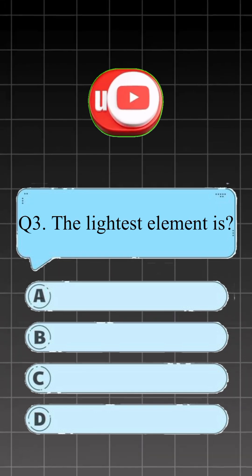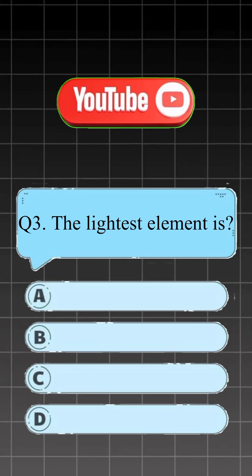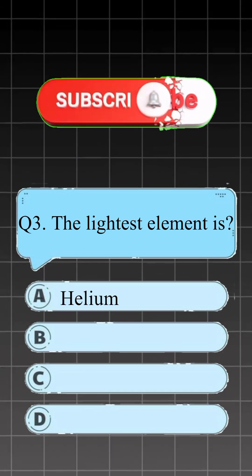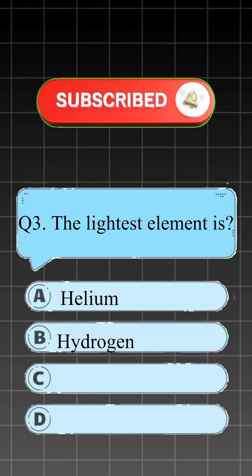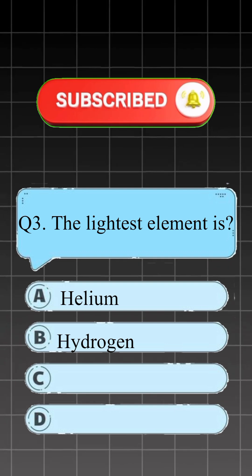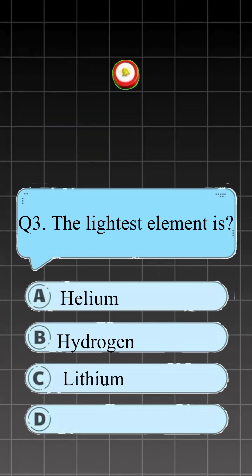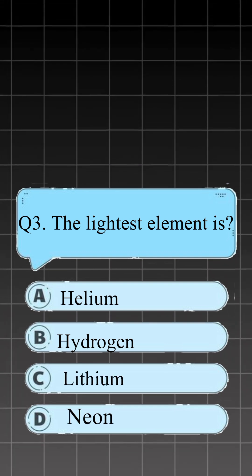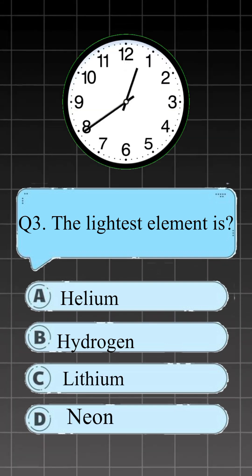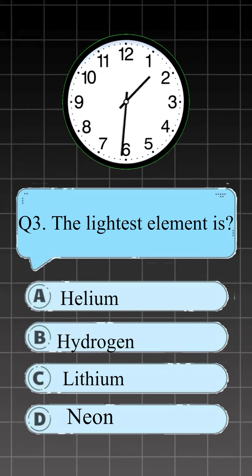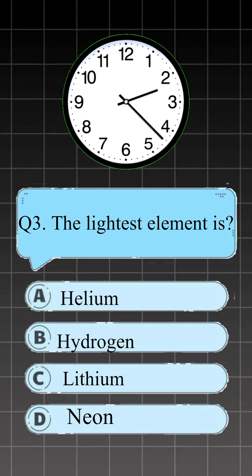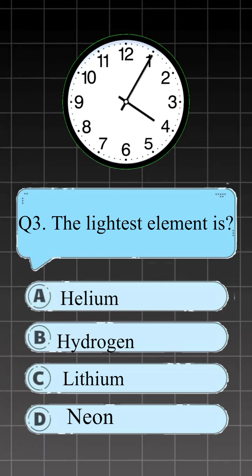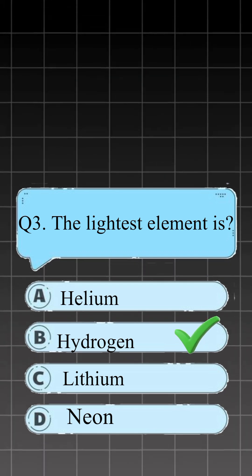Question 3. The lightest element is: A, helium; B, hydrogen; C, lithium; D, neon. Right answer is B, hydrogen.